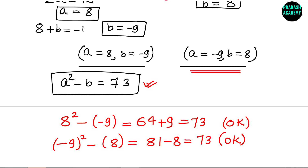In summary, we solved this by finding A plus B and A minus B. To get those, we computed A² plus B² and AB, then combined everything to solve for A and B. I hope you enjoyed this video — if so, please share with your friends, like, and subscribe to my channel. Thank you.